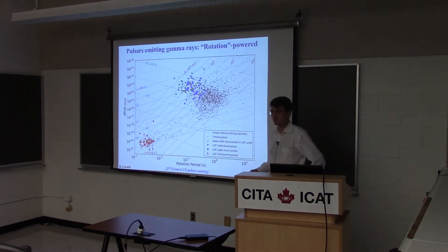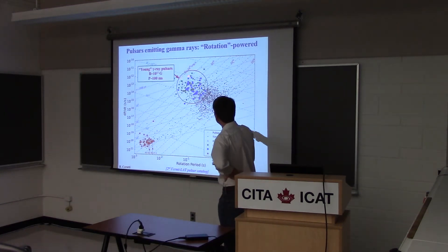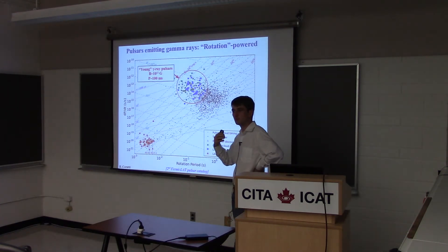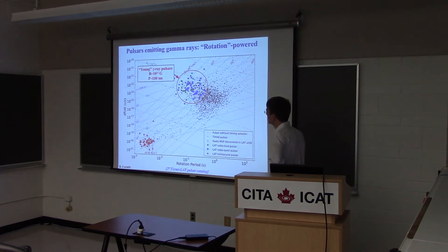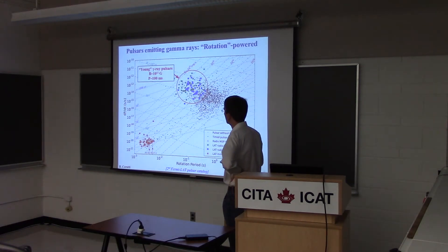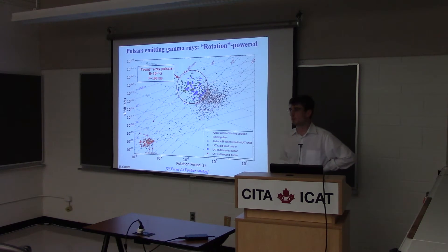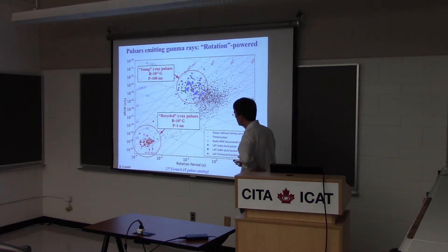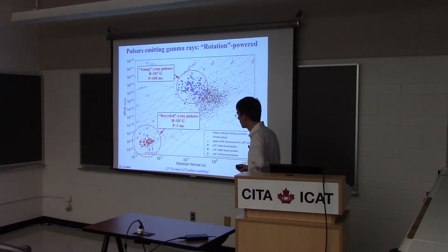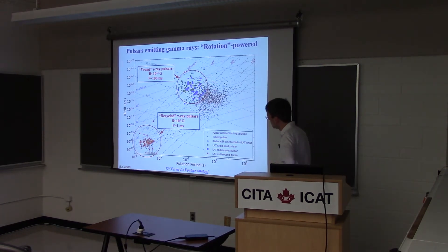We have a lot of data, and we can classify these objects into two distinct groups, plotted in the P-Pdot diagram. On the left axis you see how fast the neutron star is slowing down — giving you an idea of the power released by the pulsar as a function of its spin period. These guys here are thought to be young pulsars with very intense magnetic fields, 10^12 gauss, and about 100 millisecond spin period. The second population, called recycled or millisecond pulsars, are old pulsars with lower magnetic fields around 10^9 gauss and a few millisecond spin period.